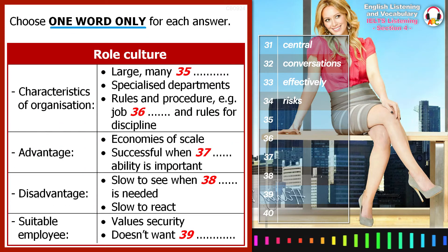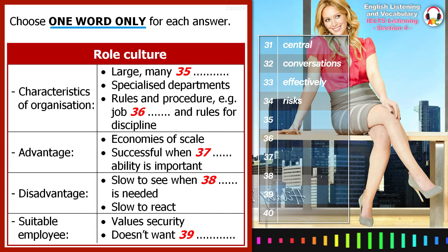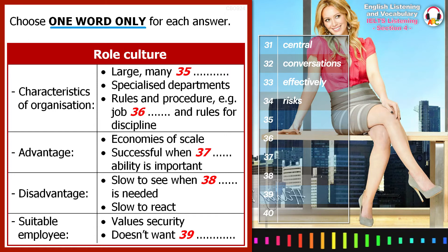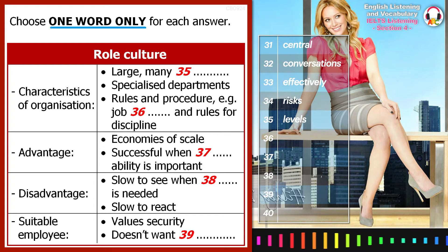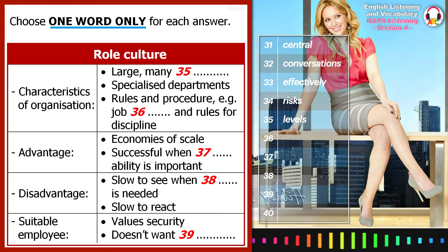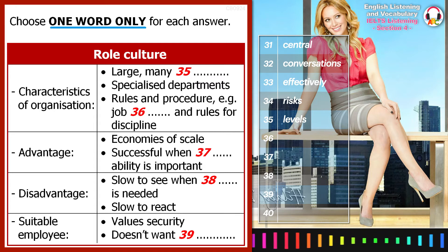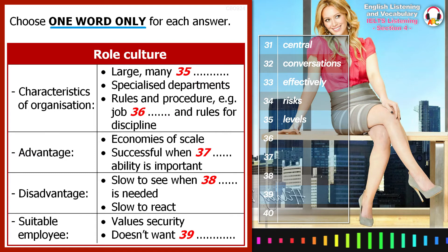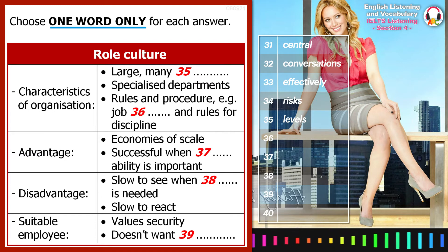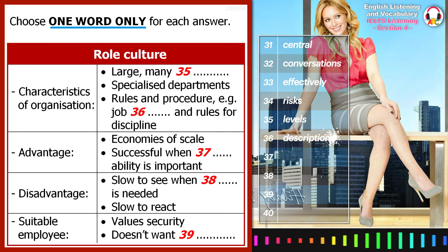The next type is known as role culture — that's R-O-L-E, not R-O-L-L, by the way. This type is usually found in large companies which have lots of different levels in them. These organizations usually have separate departments that specialize in things like finance, sales, or maintenance. Each one is coordinated at the top by a small group of senior managers. Typically, everyone's job is controlled by sets of rules and procedures — for example, there are specific job descriptions, rules for discipline, and so on.